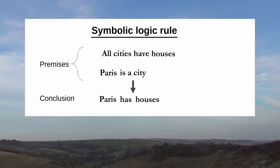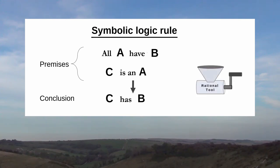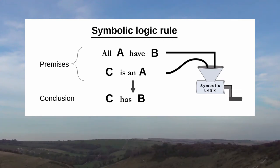Aristotle identified a whole collection of such symbolic rules. And we can think of this collection as a rational tool, similar to the rational tools I've talked about in other videos. This would be a rational tool for calculating logical conclusions using the rules of symbolic logic. The premises are the inputs, and we crank the handle to get the conclusion as the indisputable output.